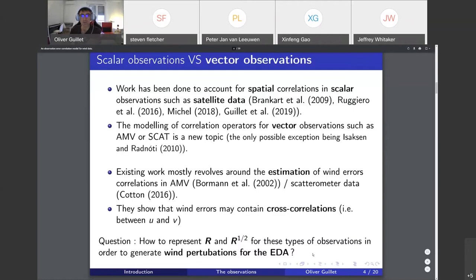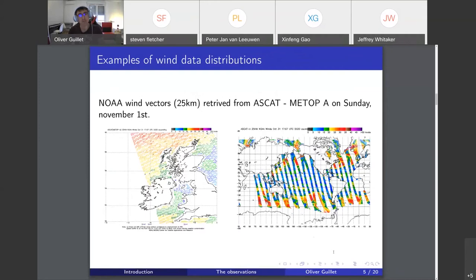The question is how to represent R, and in case of EDA, square root of R, for these types of observations in order to generate wind perturbations for the EDA.